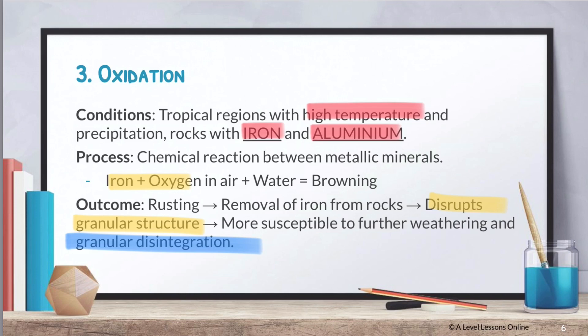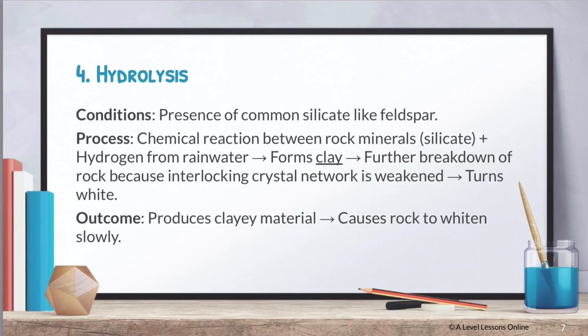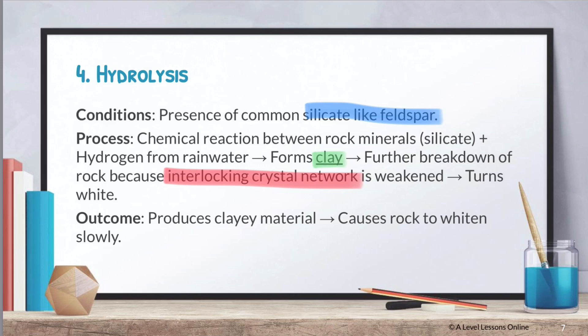Hydrolysis takes place when there are silicates such as feldspar — we learn about feldspar in rocks. When there's a chemical reaction between rock minerals, for example silicate and hydrogen, what happens is that it forms clay. Clay is very weak in structure; the more technical term is the interlocking crystal network. As a result, this clay may actually turn white, and that in itself is a form of weathering. Hydrolysis is a bit more complicated — I don't recommend you use it; use the rest instead if you need to explain for a 12-mark question.